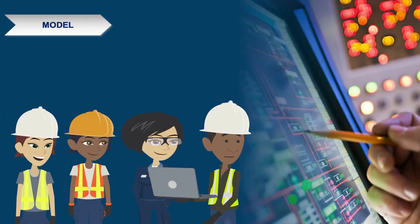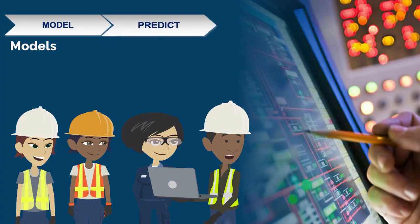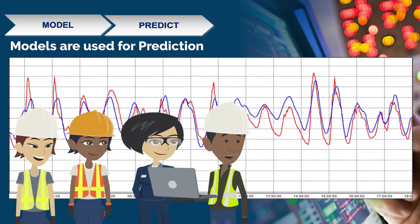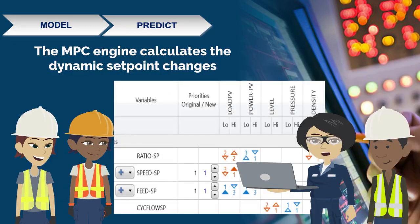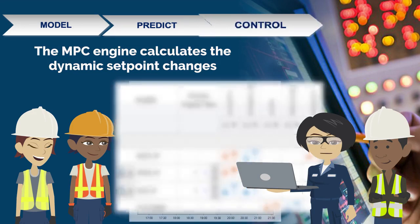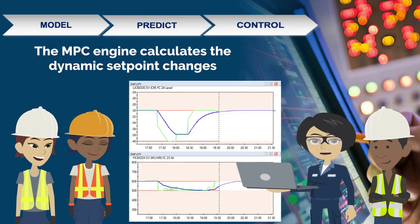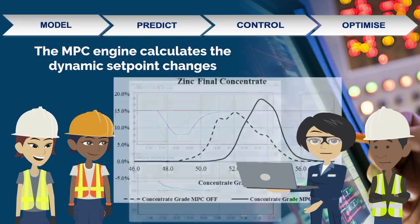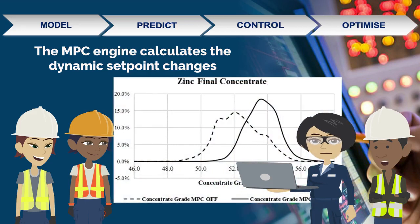Because the models are dynamic, they look into the future — this is a rarity on a process plant. The MPC engine calculates the dynamic set point changes to move the process safely to the optimum point. So the MPC calculates where to go and how to get there, all without operator intervention.